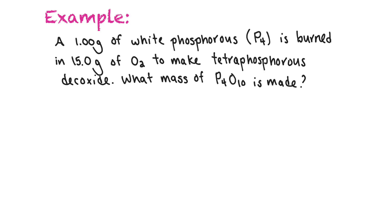Again, we first find the balanced chemical equation: P₄ + O₂ → P₄O₁₀. The phosphoruses are balanced — 4 on each side — but there are only 2 oxygens on the reactant side and 10 on the product side. So we put a 5 in front of O₂ to give the balanced equation: P₄ + 5O₂ → P₄O₁₀.